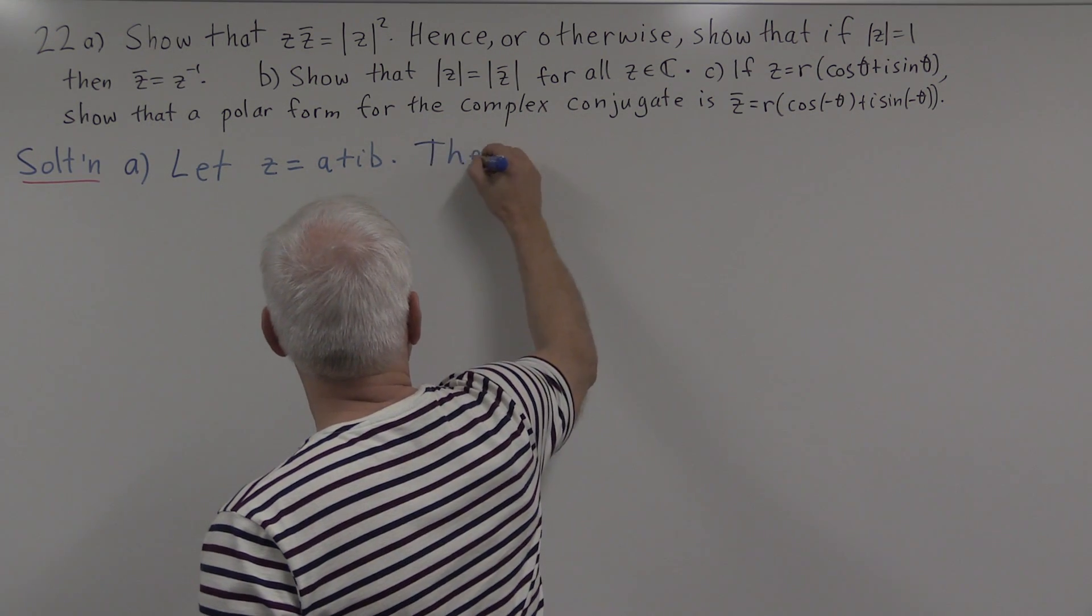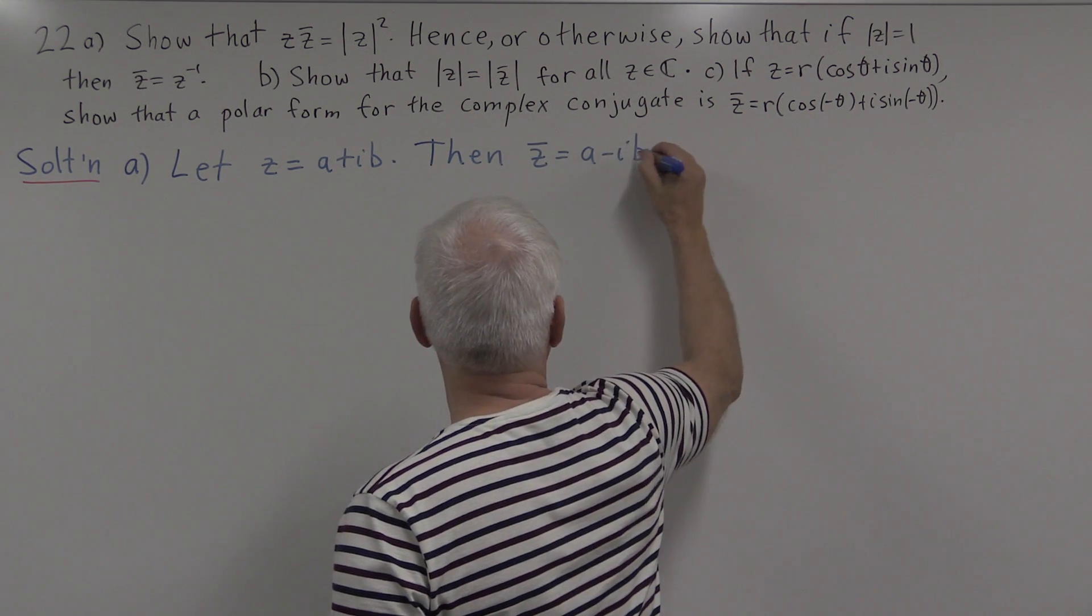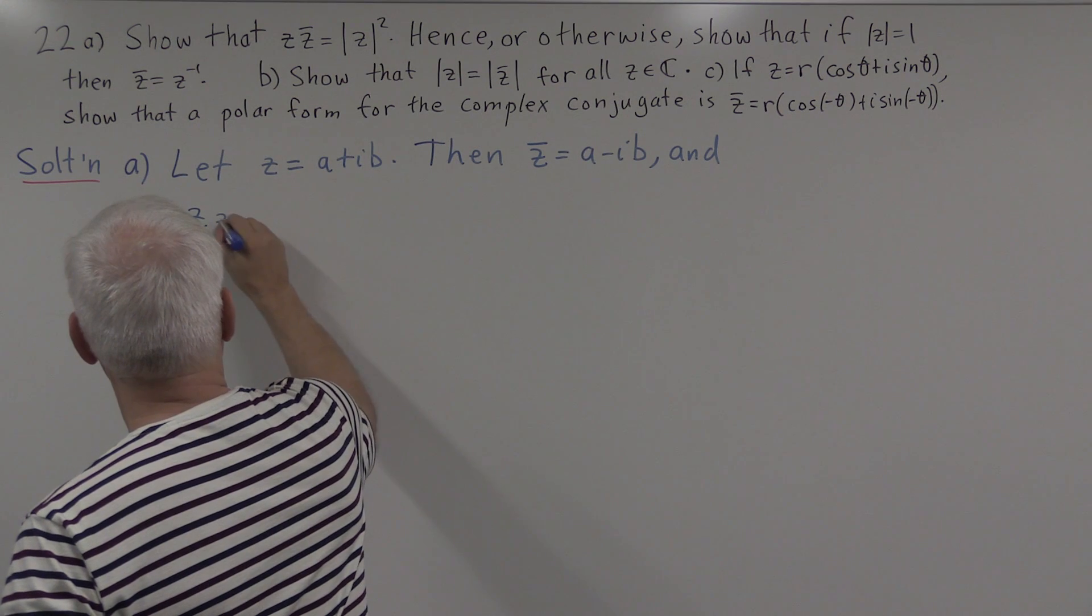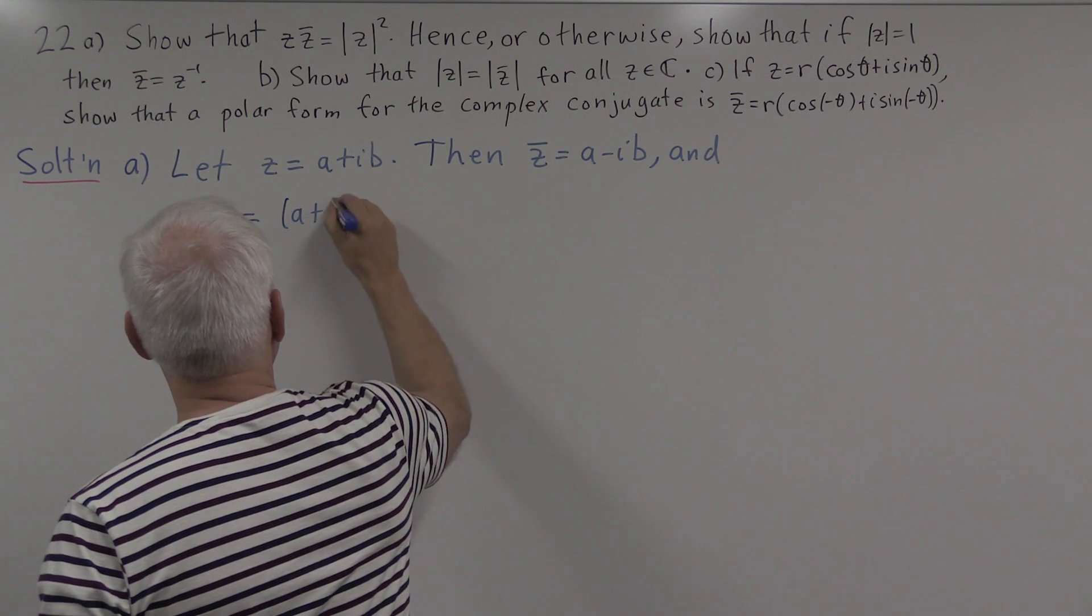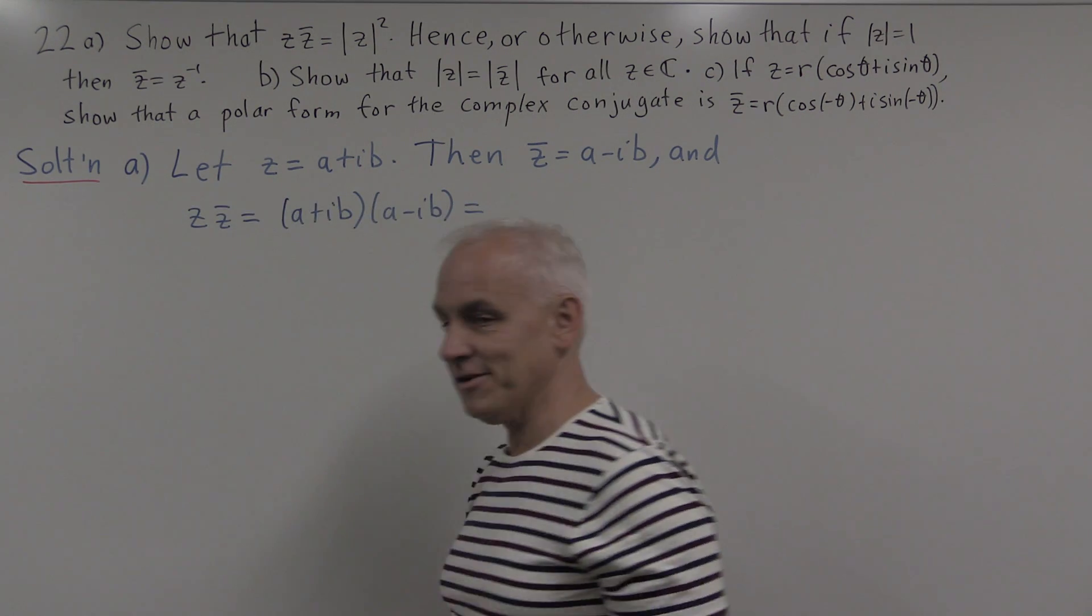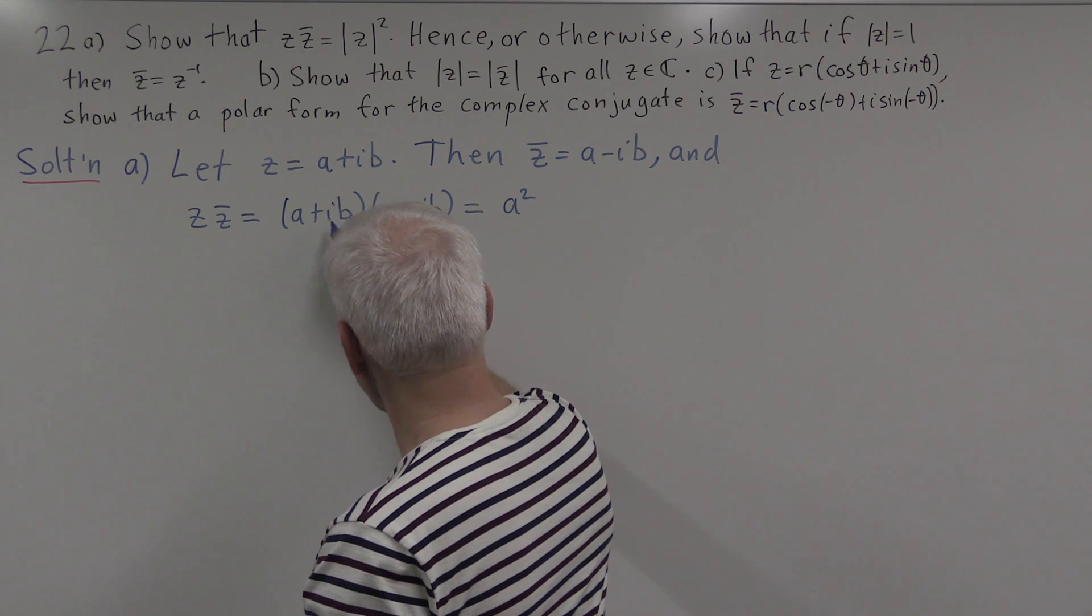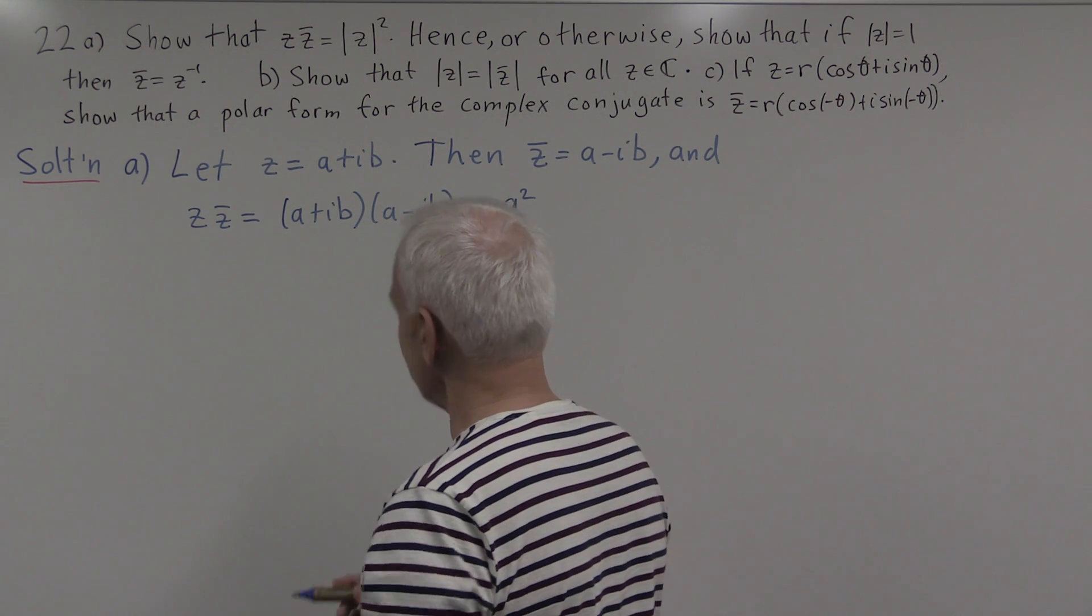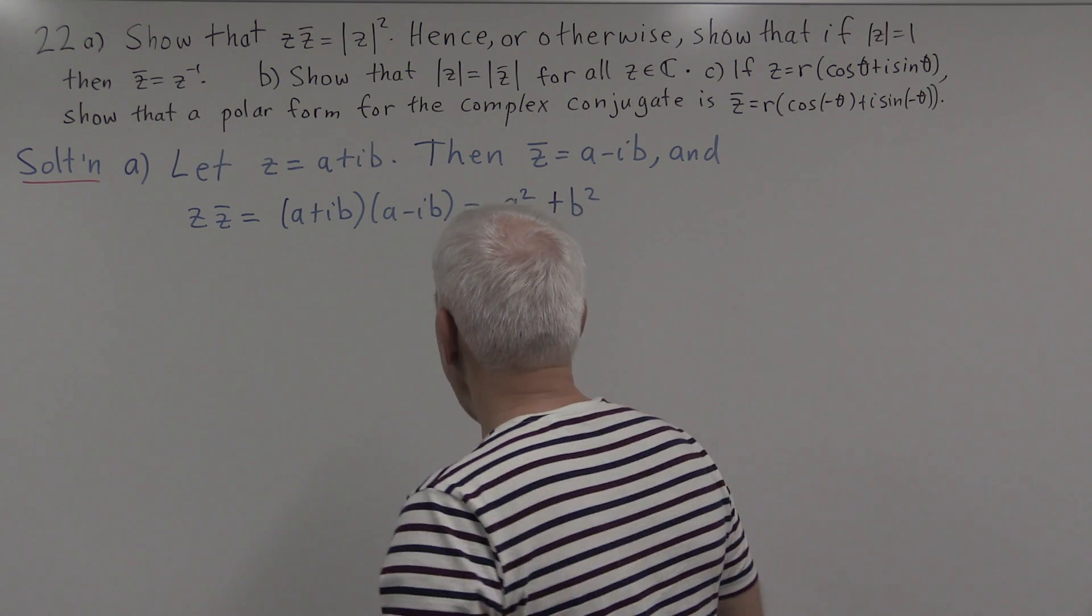Well, then we know what the complex conjugate is: z-bar is a - ib. And so when we multiply z times z-bar, we're going to get (a + ib) times (a - ib), and that's a difference of squares kind of thing. We get a² and we're going to get ib times -ib, that's b² times i² times -1. The i² being -1 gives us a total of b², and the imaginary part here is 0 because the a times -ib term and the a times +ib term exactly cancel.